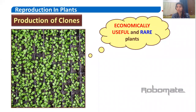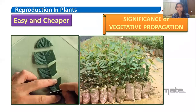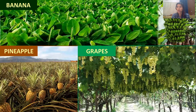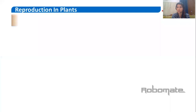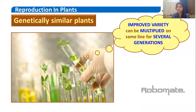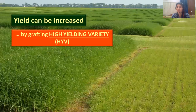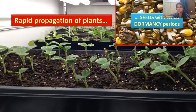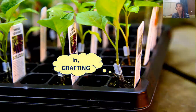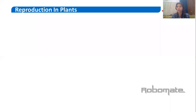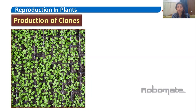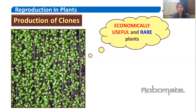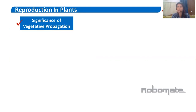To recap the significance of vegetative propagation: first, it is an easy and cheaper method. Second, it helps propagate plants that do not produce viable seeds under natural conditions. Third, it helps produce genetically similar plants for many generations. Fourth, yield can be increased. Fifth, plants with seeds of longer dormancy can be rapidly propagated. Sixth, certain characters of the stock can be transferred through grafting. Seventh, production of clones of economically useful and rare plants at large scale. In our next video, we will start sexual reproduction of flowering plants.